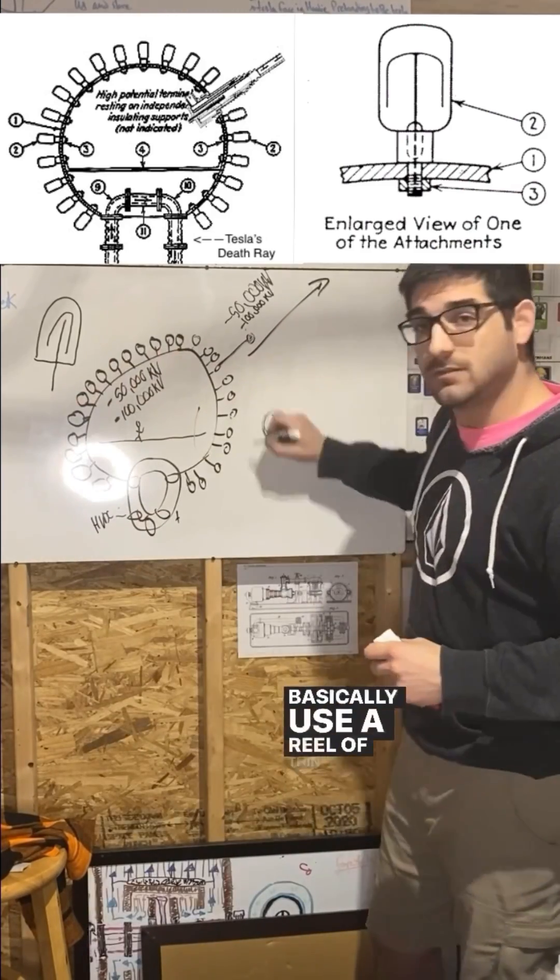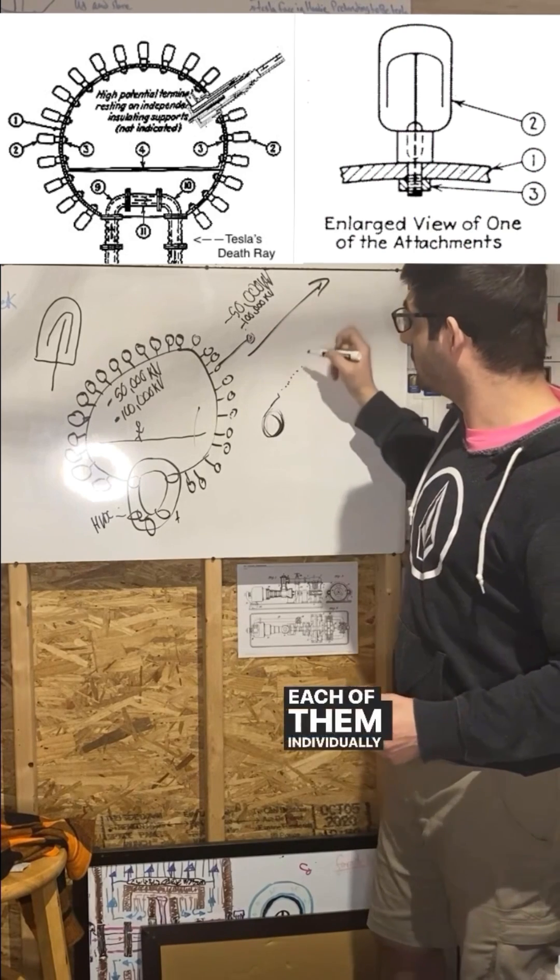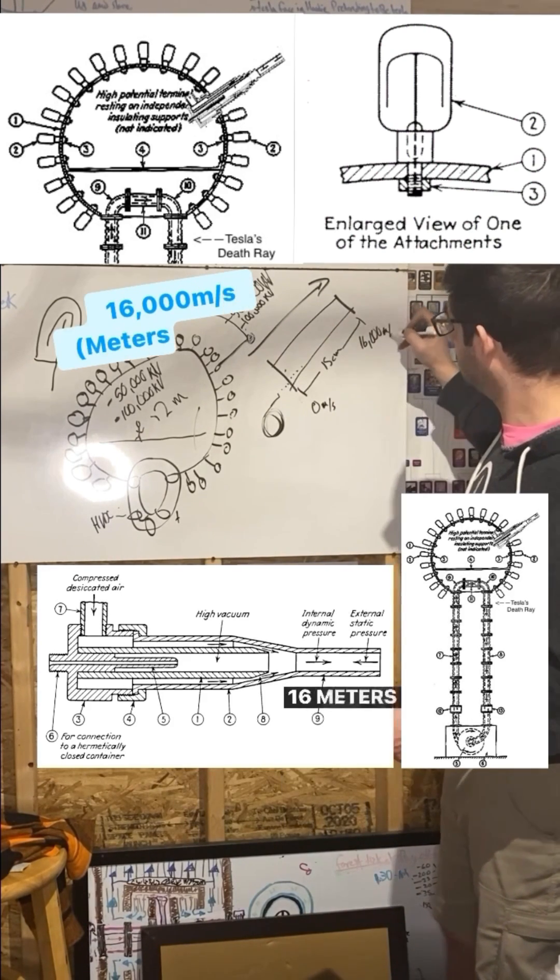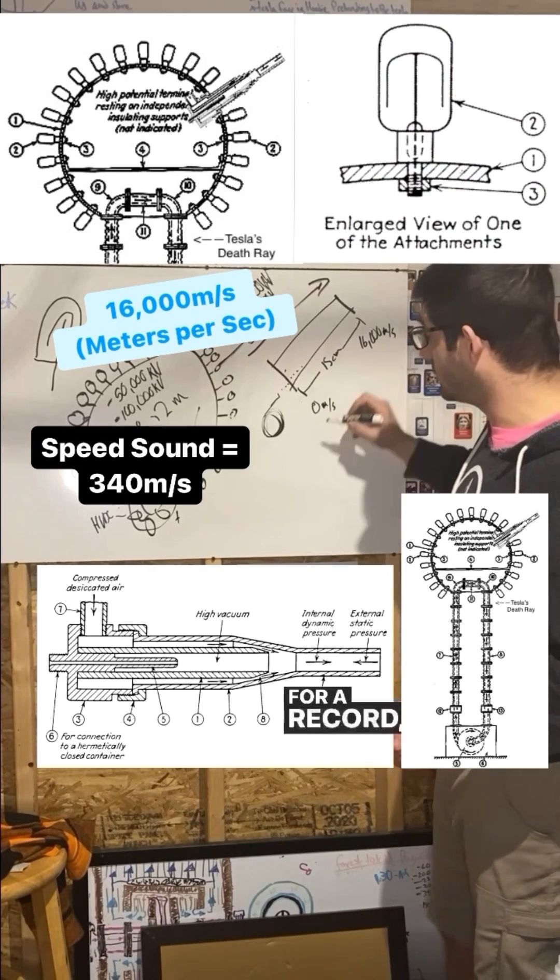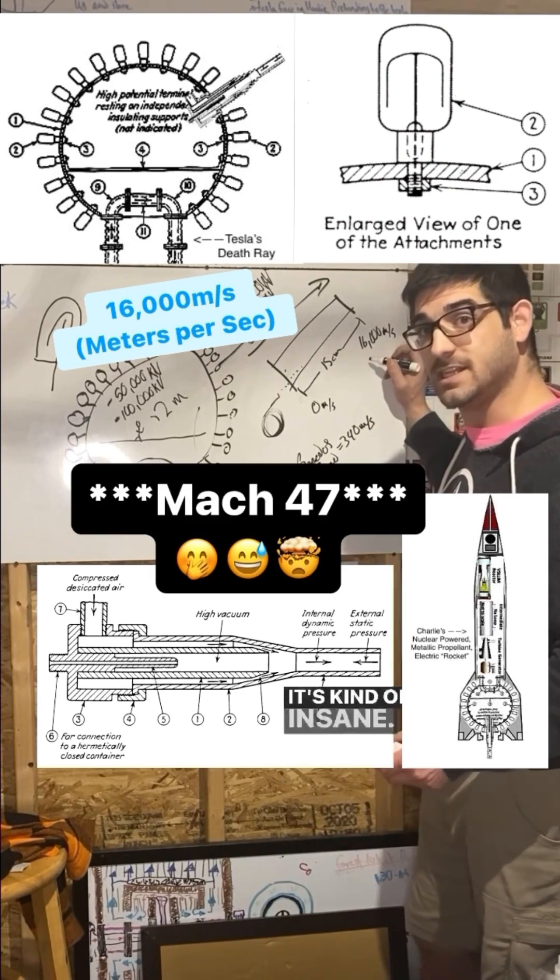The premise is that he would have a reel of thin tungsten wire and you feed that into a nibbler. All these little tungsten bits, each of them individually, go through a 15 centimeter long nozzle and accelerate from 0 meters per second to 16,000 meters per second. For reference, speed of sound is 340 meters per second - it's like Mach 40, which is kind of insane.